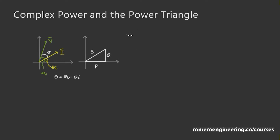In other words, theta is going to be equal to theta_v minus theta_i. Now we're going to start defining all our voltages and currents in terms of RMS quantities, because that's what's typically used in power system analysis. So the phasor V has a magnitude of V_RMS at an angle of theta_v, and likewise the current has a magnitude of I_RMS at an angle of theta_i.